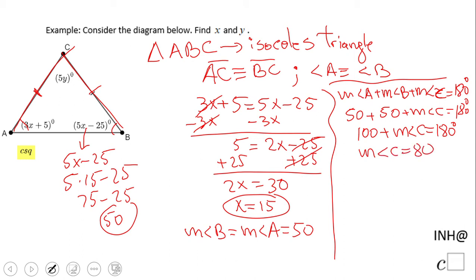Now we notice that 5y is the measure of angle C, so we set up the equation 5y = 80. Divide by 5, and y = 16.